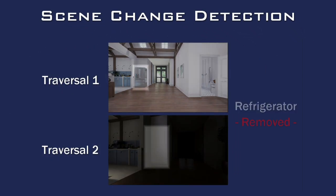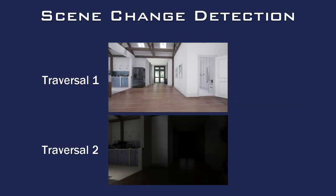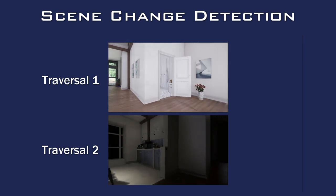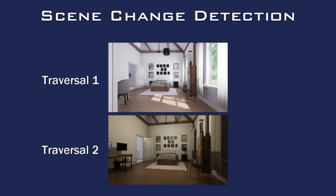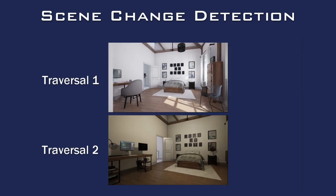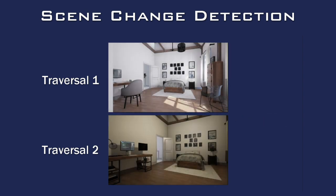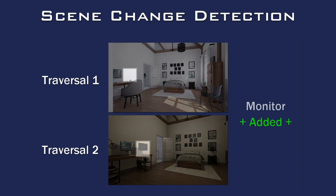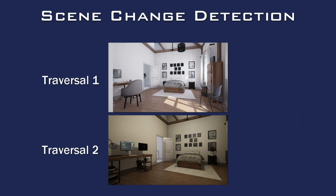In our Scene Change Detection Challenge, a robotic agent must traverse a given environment twice across two different moments of time and report the differences that can be observed between traversals. Between the two traversals, some objects will be removed, whilst other objects will be added. Performance is then ranked on how well these changes have been identified.